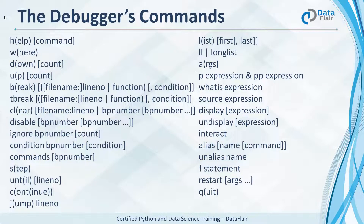Help displays some help about the debugger's commands. Where prints a stack trace. Down moves the current frame count down by a given number of levels — you can type 'd' or 'down' for this. Break tells us about the breakpoints in our code. Every command has a useful function, and we'll see this in the demonstration on this topic.